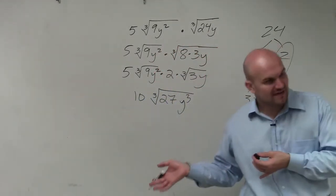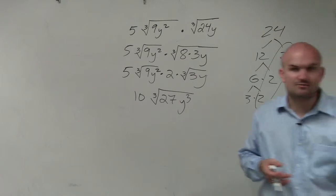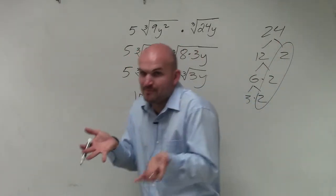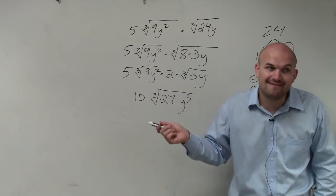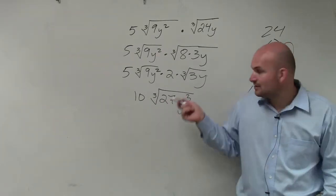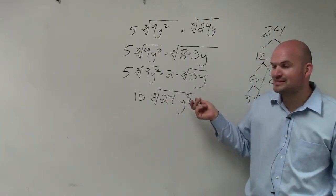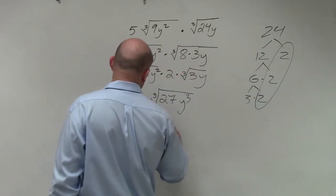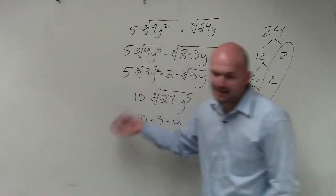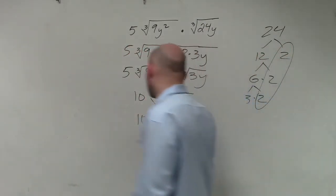Now, I could prime factorize these. Or hopefully, you guys remember, the cube root says what number multiplied by itself three times. Is there a number that's multiplied by itself three times and gives you 27? 3. And what variable multiplied by itself three times gives you y³? y. So therefore, I have 10 times 3 times y. And I can multiply the 10 times 3, which is 30.